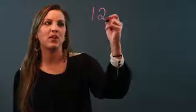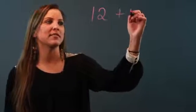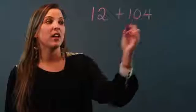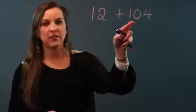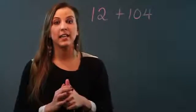So if I have, for example, the number 12 plus the number 104, these are all significant digits and these are all significant digits and we're not dealing with any decimals here.